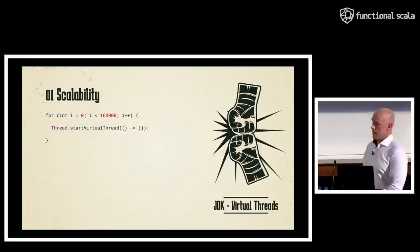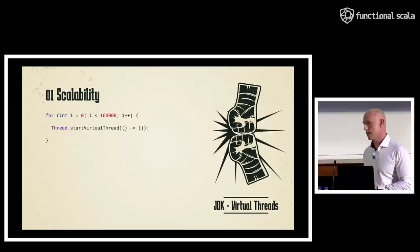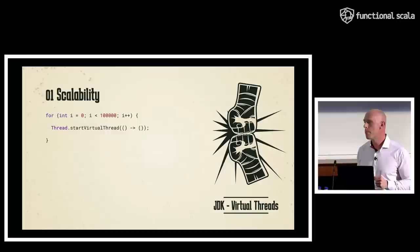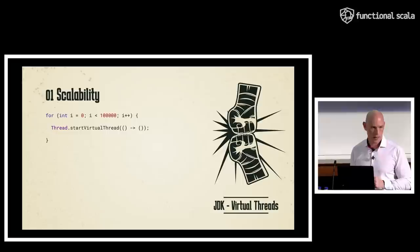In JDK 19, with experimental preview mode enabled, you can create virtual threads so easily — it's Thread.startVirtualThread. This is an ordinary for loop that runs 100,000 times and spins up 100,000 threads that do nothing. And this works. Try to do that with real threads — that will go quite wrong. With virtual threads in Loom, it's just amazing.